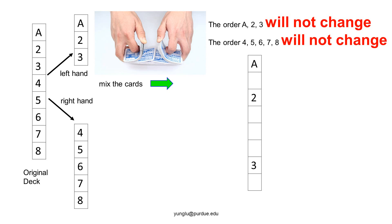Similarly, the order of 4, 5, 6, 7, and 8 must not change. 4 must always be above 5, and 5 must always be above 6. This is a property of riffle shuffling.